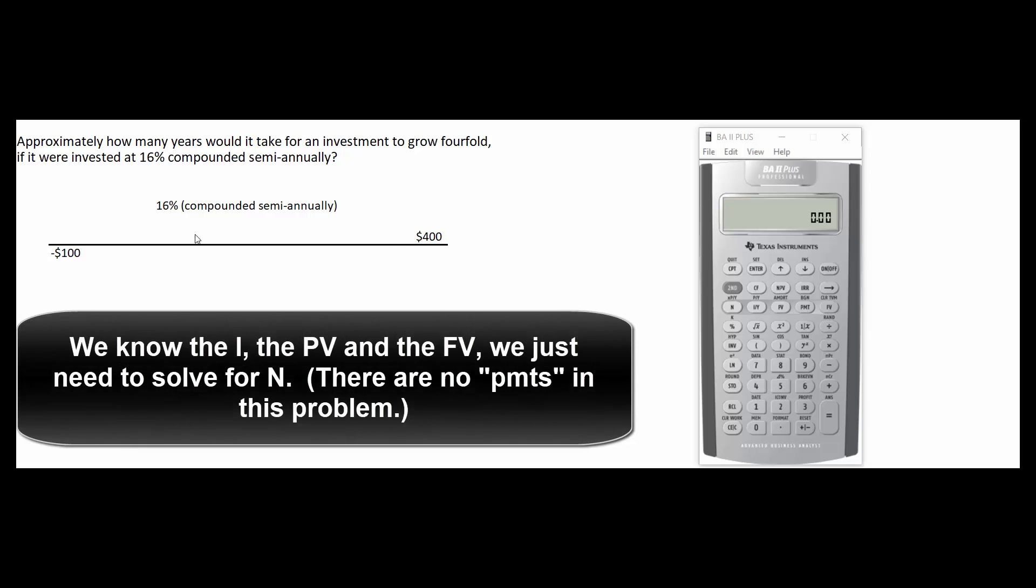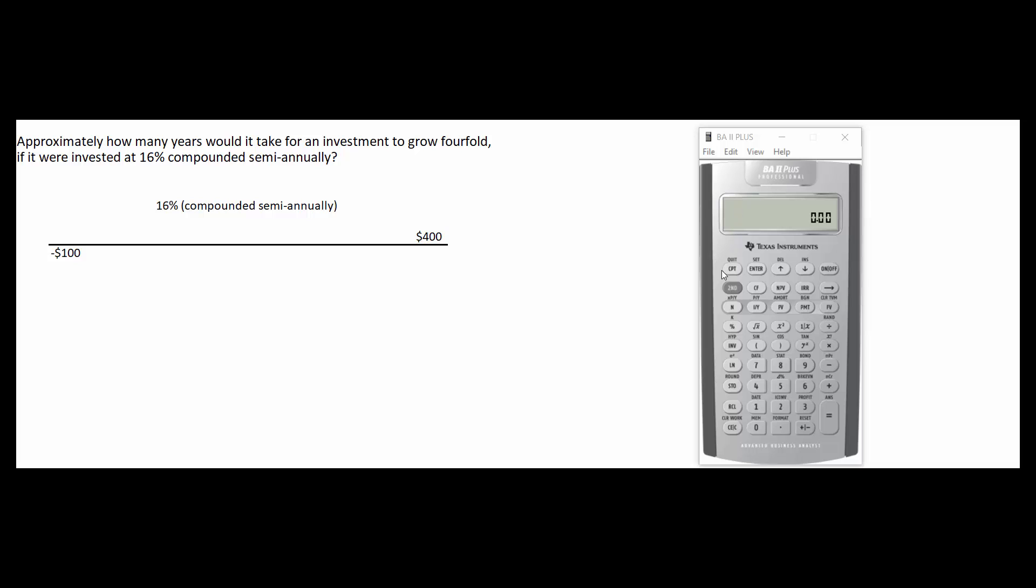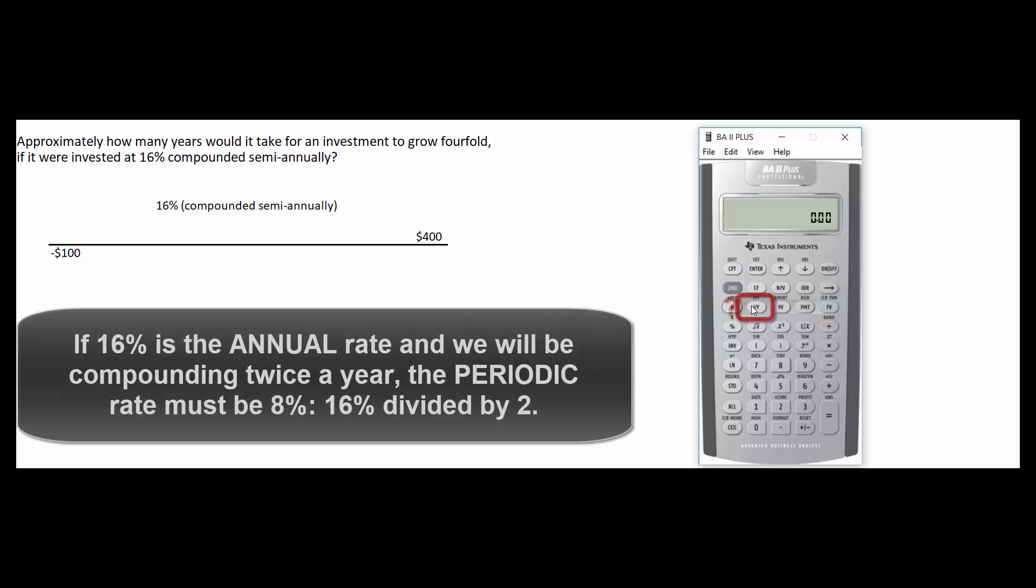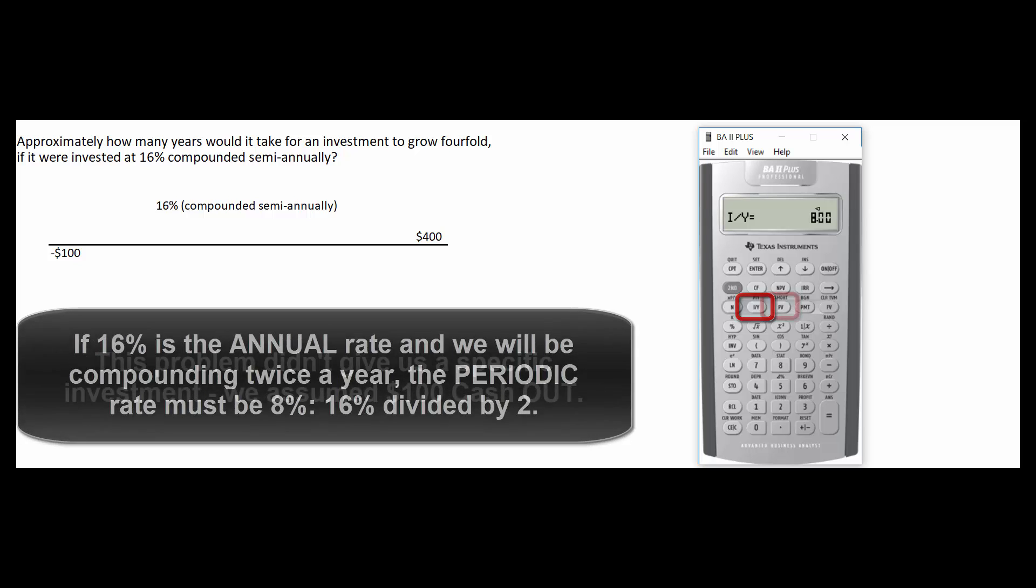All that's left now is to solve for the N. We have the I, we have the PV and we have the future value. I'm going to hit second FV that clears out the third row. N is what we're going to solve for. What's the interest per period? It's 8. If it's 16 per year and it compounds semi-annually that means it's 8% per six month period.